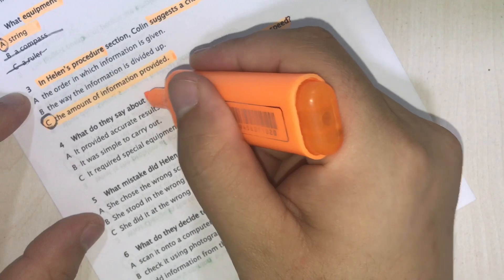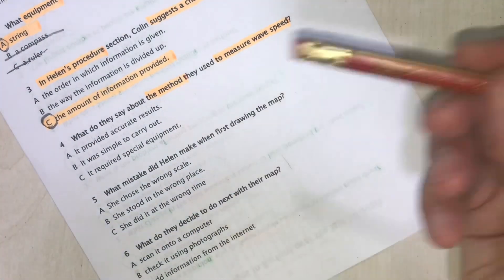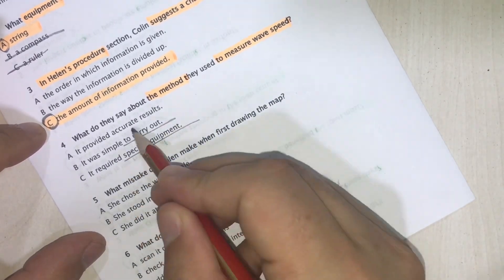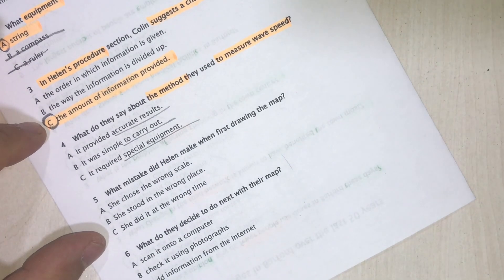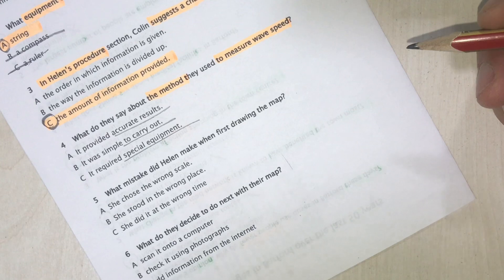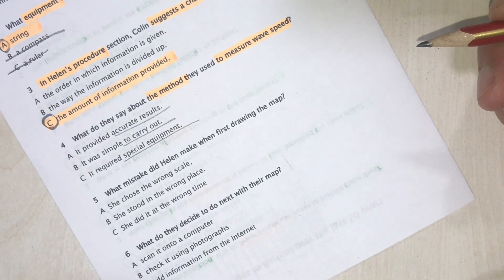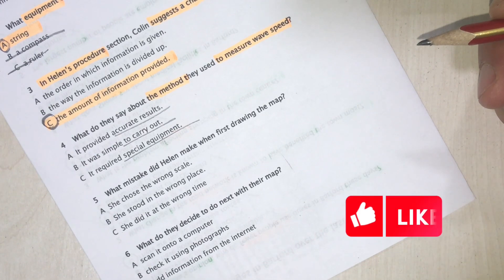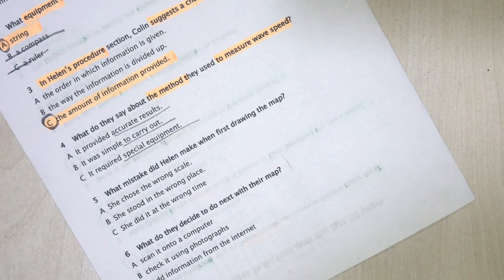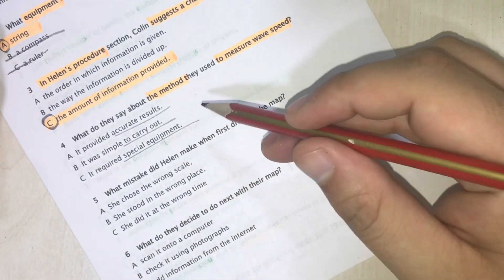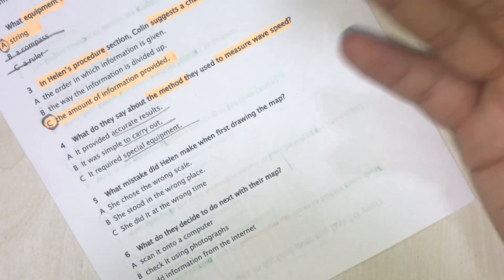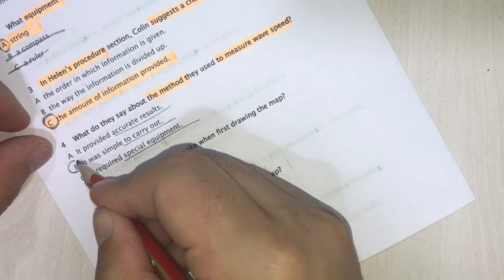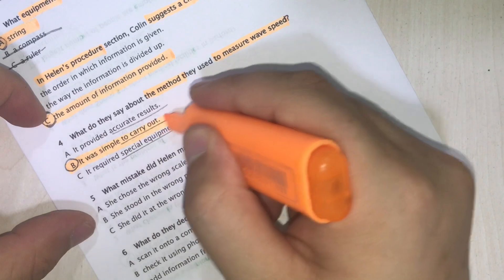Question 4: What do they say about the method they use to measure wave speed? The method to measure wave speed. Audio: 'Let's describe our method of investigation. How we measured wave speed. I was surprised how straightforward that was. I'd expected us to have some sort of high-tech device, not just stand there and count the number of waves per minute.' She said she expected to use special equipment, and the guy said he was surprised how easy and straightforward it was. So the answer is B, because it was easy to carry out.